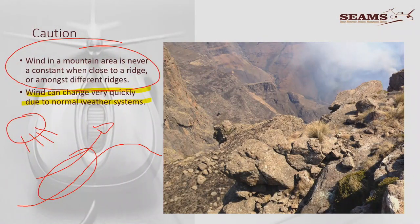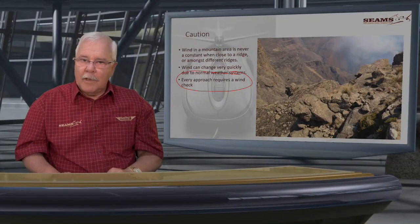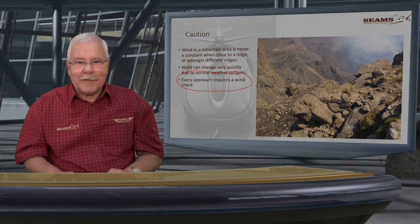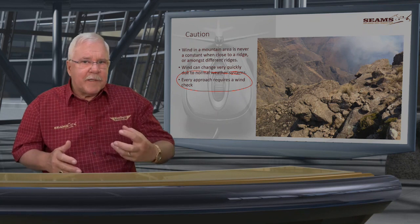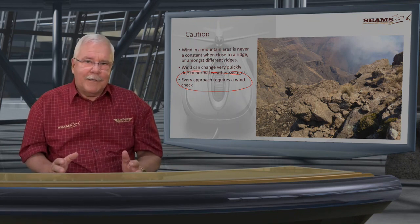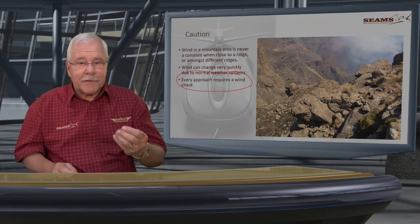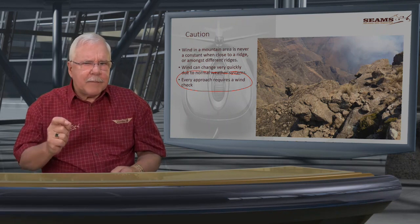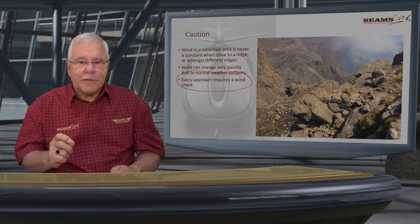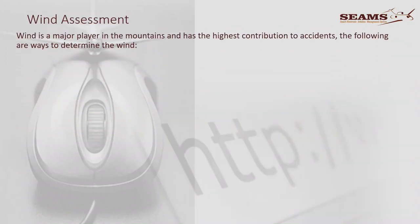Every approach requires a wind check — every single approach. Even if you just learned the wind conditions 10 minutes ago, that's more than enough time for the weather to have changed. If you're in the circuit and have other indications the wind is steady, you can carry on, but a wind check doesn't mean going through a five-minute ritual. Just keep the wind in mind all the time for every approach — that's what I mean by checking.